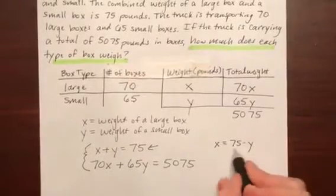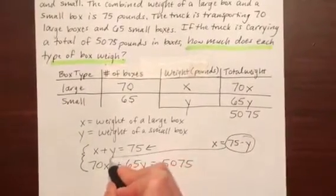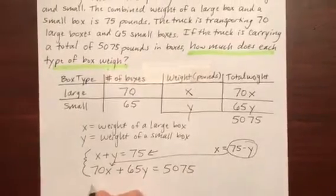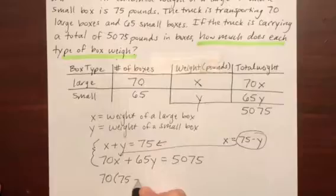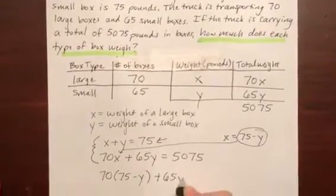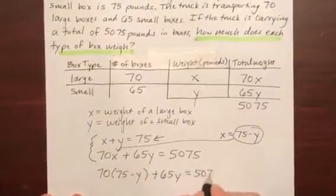And now I'm going to put this in right in place of the x in this equation. So I have 70 times 75 minus y plus 65y equals 5,075.